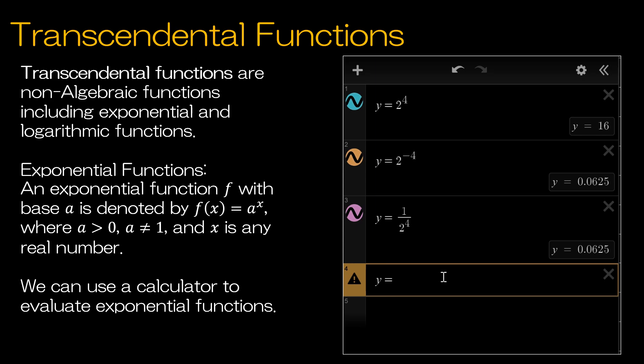We can also evaluate exponential functions when the base is between zero and one. So for instance, what if my base was one half and I'm taking one half to the fourth power? Well now I have one half to the fourth, so the base is one half and the exponent is four. And notice that's the same as one divided by two to the fourth or the same as two to the negative fourth power. So if you end up with the base that is in fact between zero and one, it's just like having a negative exponent.